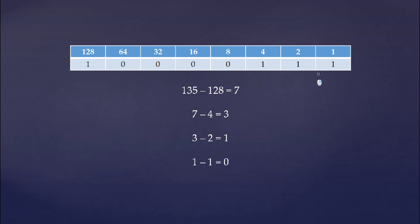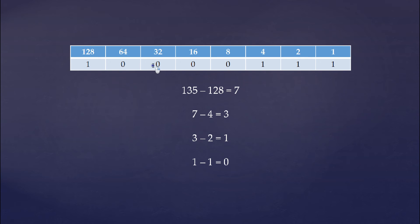We compare the 1 to our place value — it is less than or equal to; in this case it is equal. So we put a 1 there, subtract 1 from our remainder of 1, and that leaves us with 0. When you have a 0 remainder, you are done. So the decimal number 135 converted to binary is 10000111.